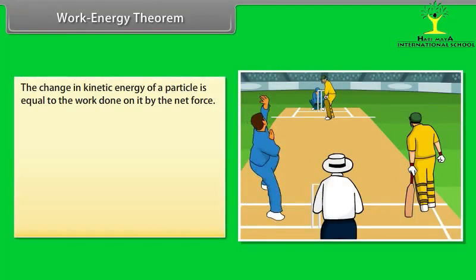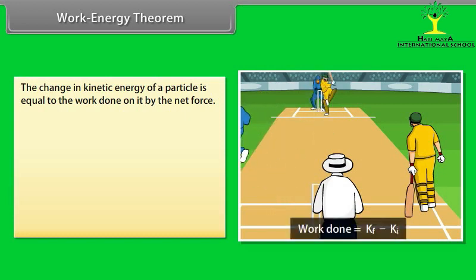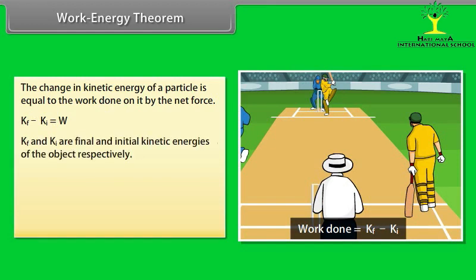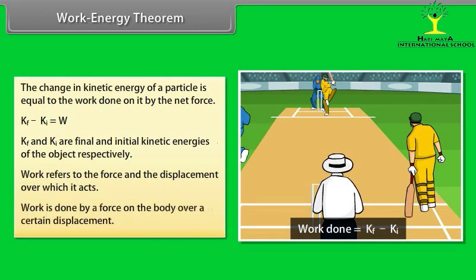Work Energy Theorem. The change in kinetic energy of a particle is equal to the work done on it by the net force. Kf - Ki = w. Here, Kf and Ki are final and initial kinetic energies of the object respectively. Work refers to the force and the displacement over which it acts. Work is done by a force on the body over a certain displacement.